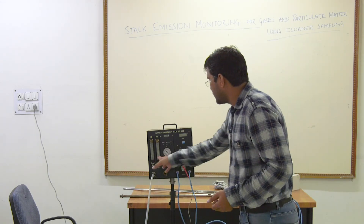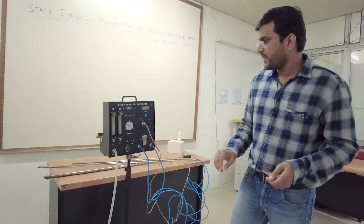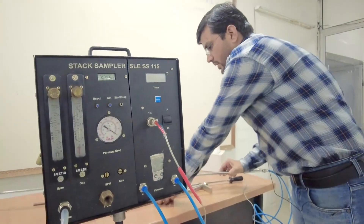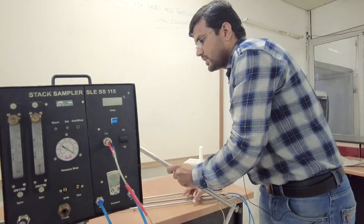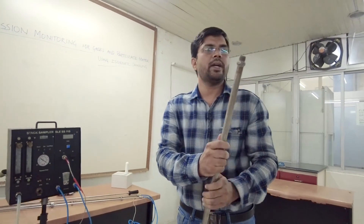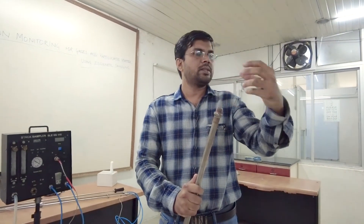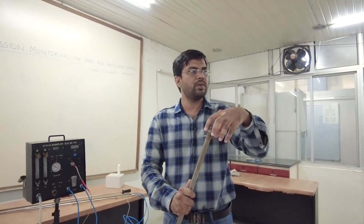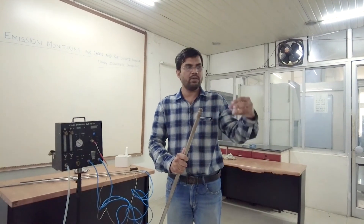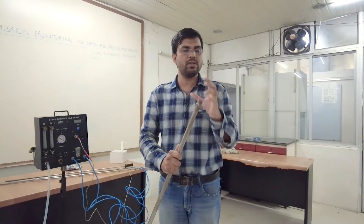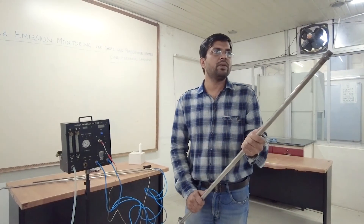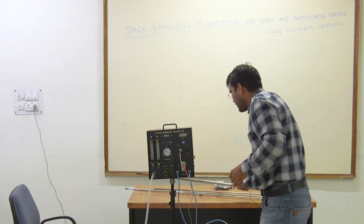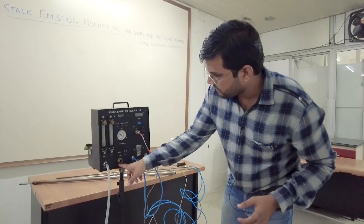There is another opening on the device. When sampling particles along with gas, we use this probe. This probe has a filter assembly at the front — when the stack emission passes through it, dust particles and suspended particles are collected inside the filter and only gas is allowed to pass through. This probe is used when doing SPM sampling, and it is connected at this point on the device.